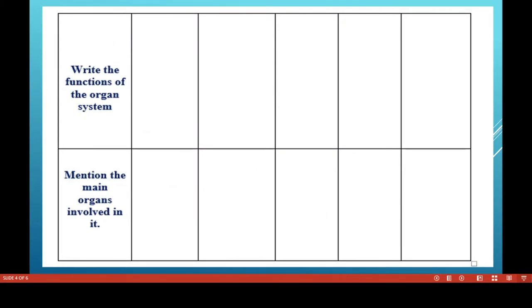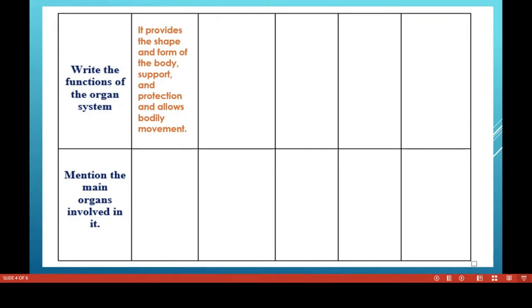First one — skeletal system. What are the functions of the skeletal system? It provides shape and form to the body, gives protection, and enables body movement. Various organs are held inside your body, and every organ is completely protected by the skeletal system. The organs involved include bones and connective tissue, including cartilage, tendons, and ligaments.